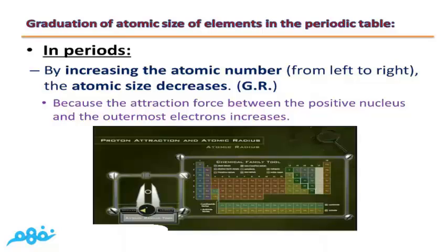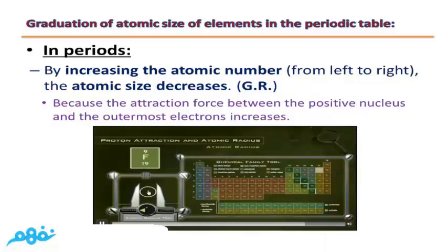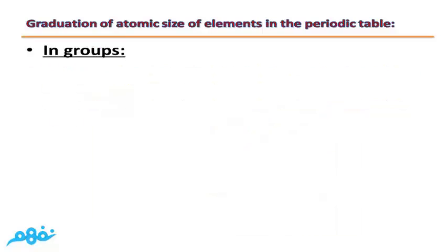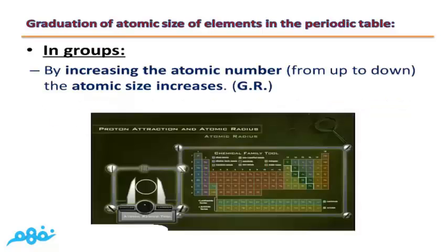As you can see from this video, if we take lithium as an example, this is the size of lithium and this is the size of chlorine. As you can see, the size of lithium is much greater than that of chlorine. This is because the atomic size of elements decreases in periods by increasing the atomic number from left to right. In groups, by increasing the atomic number from up to down, the atomic size increases.